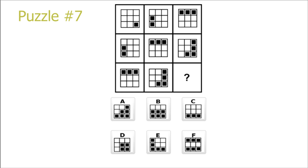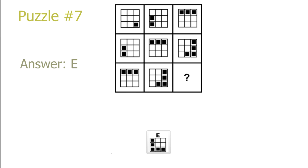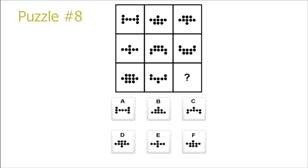Puzzle 7. Here we have the exact same situation for the rows and the columns, and all we do is rotate the picture 90 degrees and then add a black square at the most clockwise position compared to the other squares. So we take picture 8, rotate it 90 degrees, and add a black square at the most clockwise position, which will be in the top left corner, and we get the answer E.